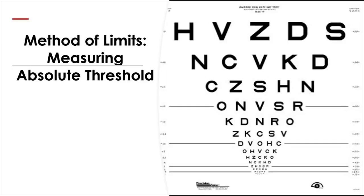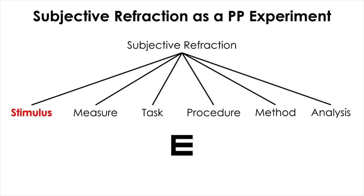Visual acuity measurement is an example of a descending series method of limits, where the measurement starts with a large enough optotype assumed to be recognized by most people — say 6/60, the top line. For people with normal vision, they can read the entire line, and then you go down the chart where letter size progressively decreases until the patient cannot read. Unlike typical threshold analysis in method of limits, the final threshold — the best uncorrected visual acuity — is considered to be the smallest line read.